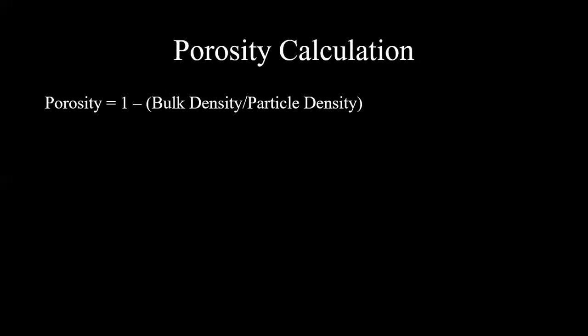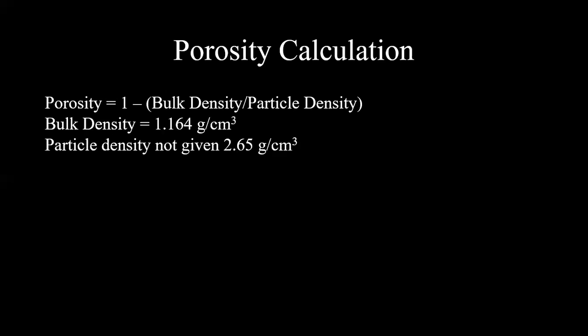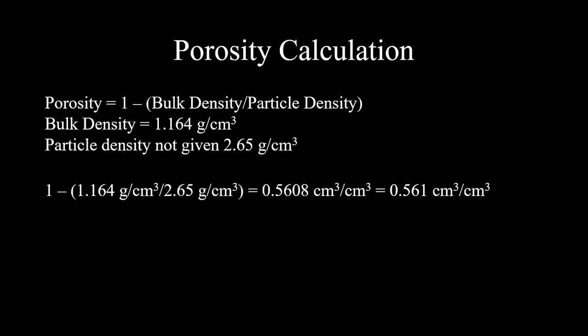Next we're going to calculate porosity. The equation for porosity is 1 minus bulk density divided by particle density. We need the bulk density from our previous calculation, which equals 1.164 grams per centimeters cubed. We're using the unrounded answer to minimize rounding error. We also need particle density — since we weren't given that, we assume the particle density is 2.65 grams per centimeters cubed, which is the standard value used when particle density is not given. Porosity equals 1 minus bulk density divided by particle density, which gives us 0.5608, or 0.561 centimeters cubed per centimeters cubed.